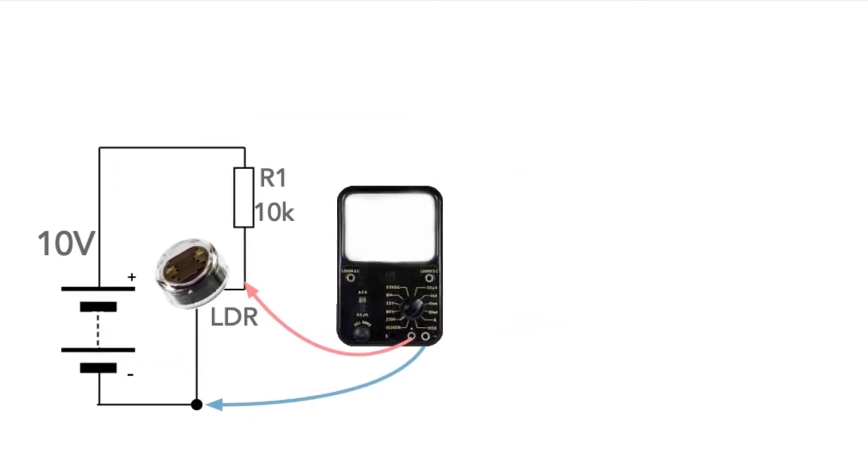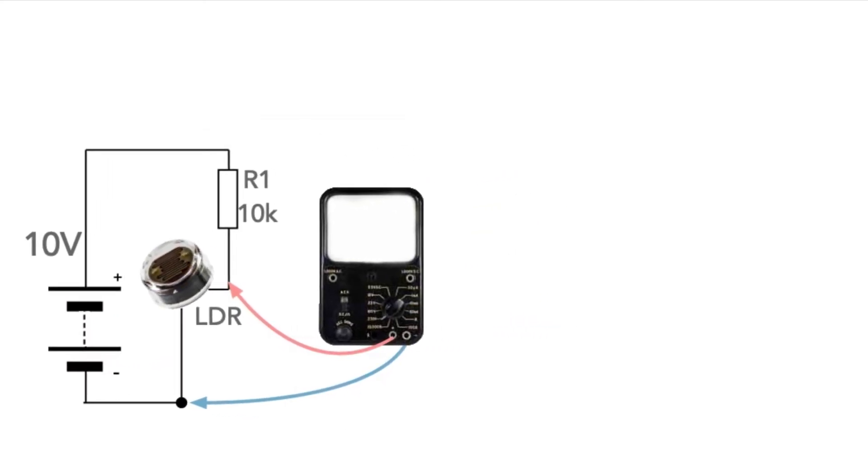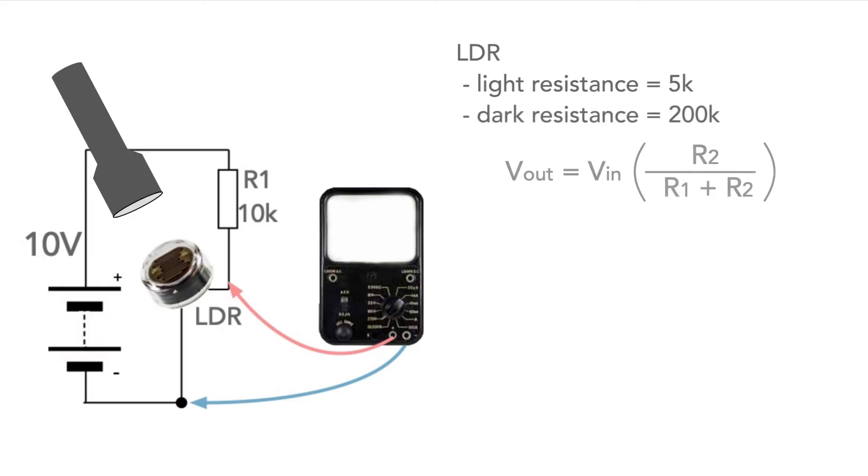If we make R1 in the circuit to be 10 kilo-ohms, and a typical LDR might vary from say 5k when it's very light to possibly 200k when it's very dark, if we calculate the figures we see that the value of voltage when it is dark is 9.5 volts and when it's light the voltage is 3.3 volts.